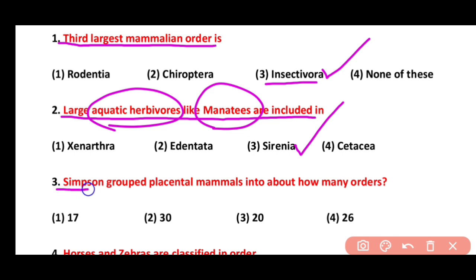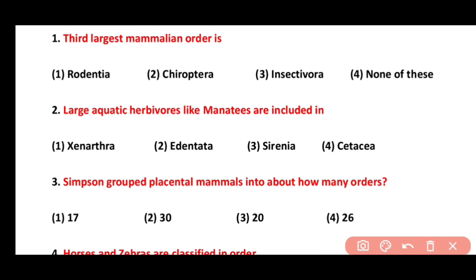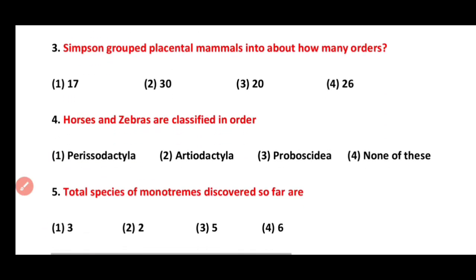Question 3. Simpson grouped placental mammals into how many orders? Options: 17, 30, 20, or 26. Correct answer is option 2. Simpson classified placental mammals into 30 orders, of which the living orders are 17.